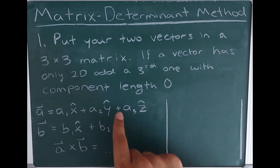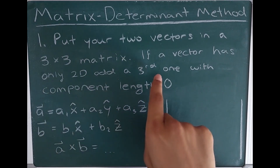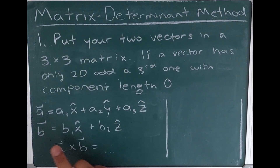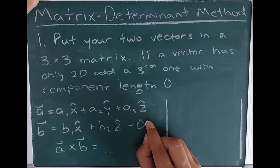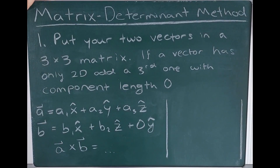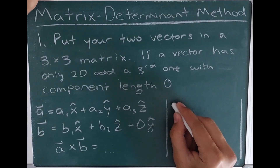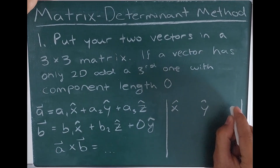If any of the vectors has only two dimensions — like vector B, which only has components in the x-hat and z-hat directions — you'll add a third component with length zero, because the cross product needs to happen in three dimensions. So to vector B, I would add a third dimension in the y-hat direction but give it a component length of zero. Now to assemble the 3x3 matrix, the first row is simply x-hat, y-hat, and z-hat. That's how the cross product in matrix form works.